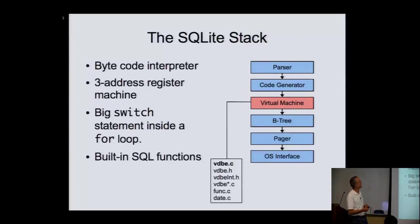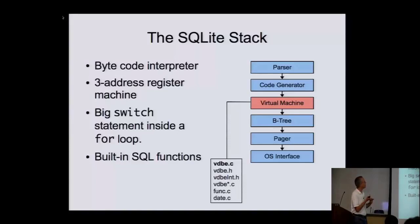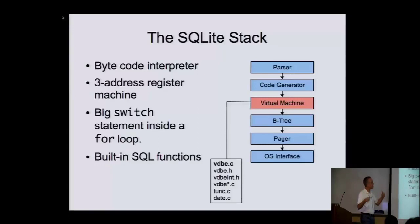The virtual machine in SQLite is a bytecode interpreter. A lot of other database engines just walk the parse tree to execute, but I wanted a bytecode interpreter. The original was stack-based, like JVM and others, but we changed it to a three-address machine, because that's more efficient and much easier to write optimal code for. It's really simple — a big for loop with a program counter, and inside there's a switch on the opcode with a case for every opcode. Part of the virtual machine also includes the implementation of the built-in SQL functions.